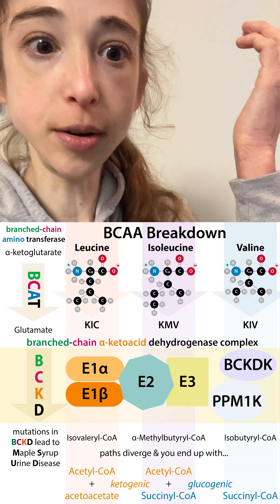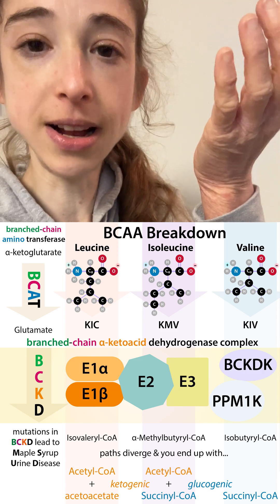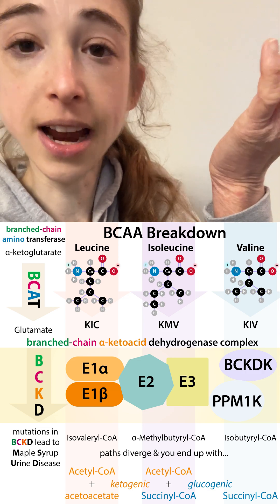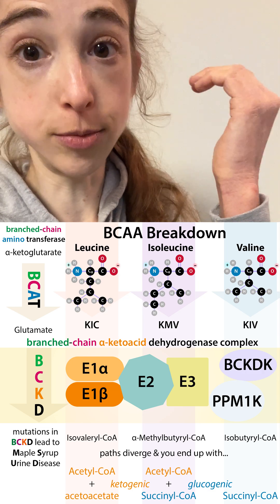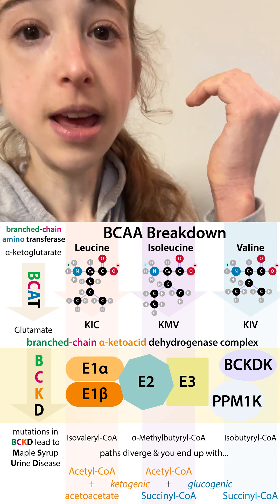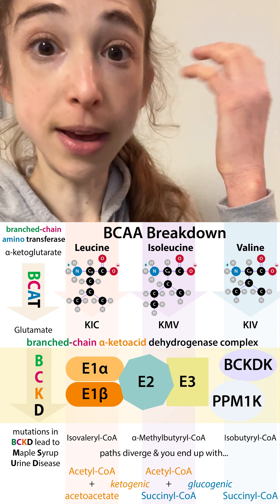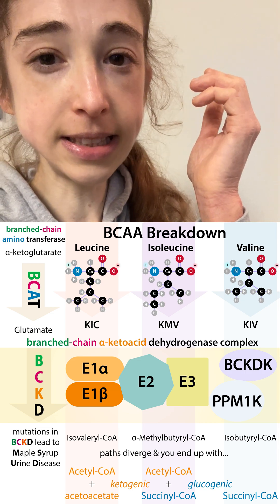Leucine especially is really good at competing to get into the brain, so leucine is going to get in, but then the other amino acids that need to get in there, like tyrosine and things, are going to have some trouble. And that's going to make it so your brain can't make the hormones and things that it needs.